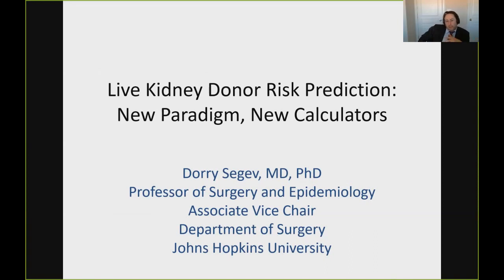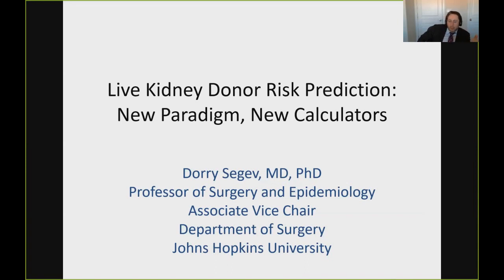When I was trained on how to talk to kidney donors, I was told to say their risk of kidney failure after donation is no higher than the general population. But donors are not drawn from the general population — they are very highly selected after careful medical evaluation. If I were considering donating a kidney, I would ask three questions: What is my baseline risk — the risk of kidney failure, death, or complication if I don't donate? What is the absolute risk if I do donate? And what is the extra attributable risk from donating?